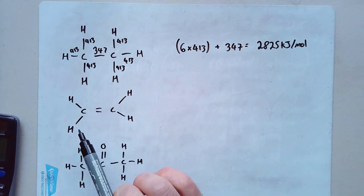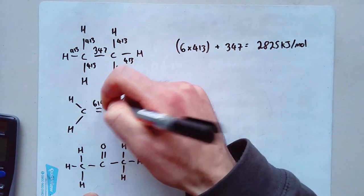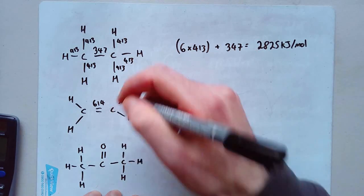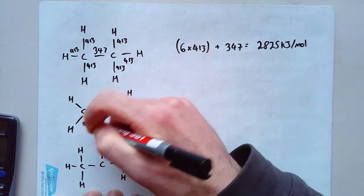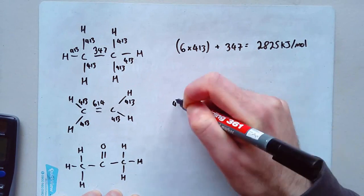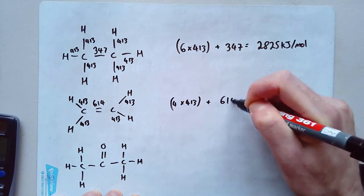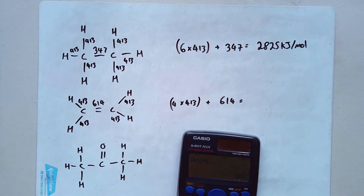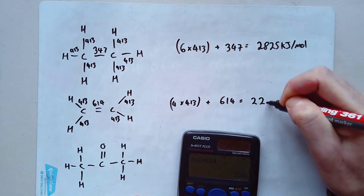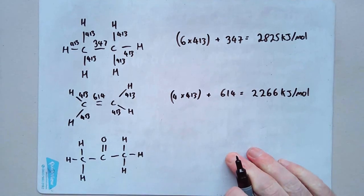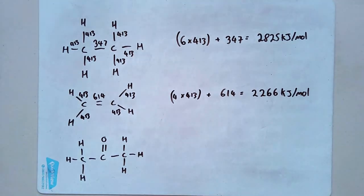Moving on, I've got a carbon-carbon double bond, which is 614. Notice that's not double 347 — the double bond is a different type of bond with a different amount of energy. Then I've got four carbon-hydrogen bonds, each worth 413. So I do four lots of 413 plus one lot of 614. Four times 413 plus 614 gives me 2266 kilojoules per mole. If you got that right, great, well done. If not, you might want to rethink this one.